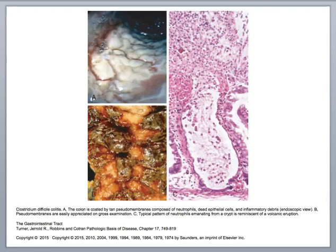Grossly, the appearance gives the name pseudomembranous colitis. What you see is a diffuse coat of white-gray to tan-yellow purulent material that forms a layer, or pseudomembrane, on the surface of the mucosa. This can also become more discolored and gray-brown in appearance, but it's easily appreciated on gross examination.